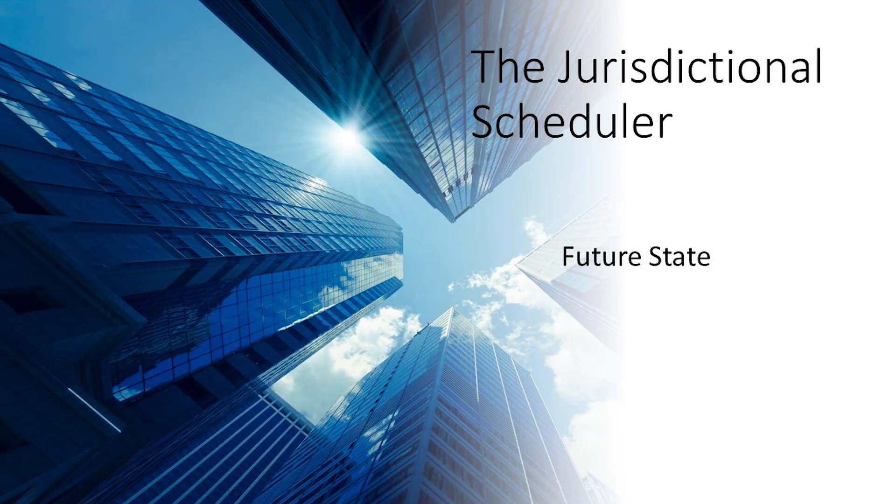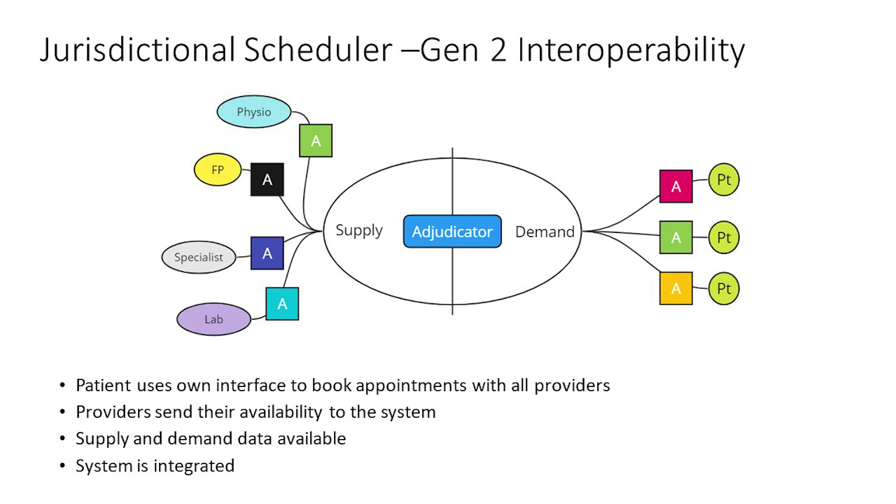Let's look at the implications of generation two interoperability. This would provide system-wide information in real time, and we could use it in any data category — e-referrals, e-prescriptions, e-lab ordering. But we're going to look at how we are approaching it for scheduling, and we're calling this the jurisdictional scheduler. On the right you can see patients — there are three of them. On the left are providers: family doctor, physiotherapy, nurse practitioner, specialists, and also facilities like labs, x-rays, emergency rooms, walk-in clinics — even hospitals and other facilities at a higher level.